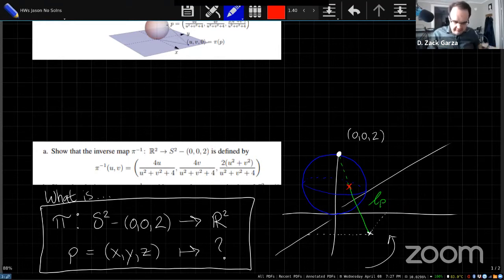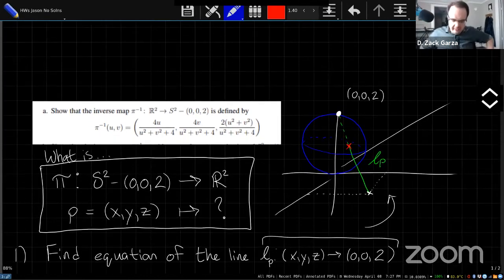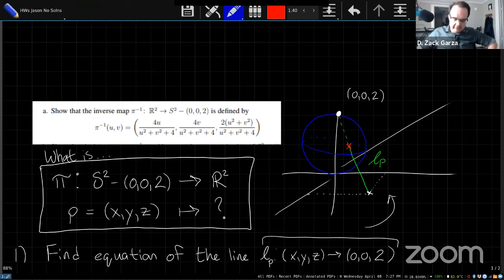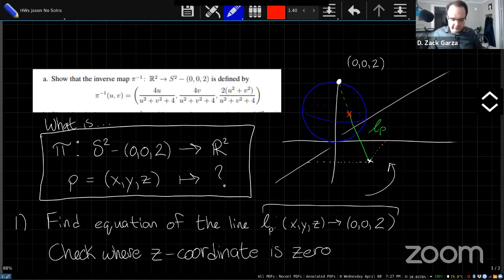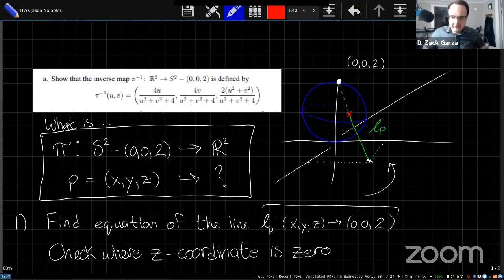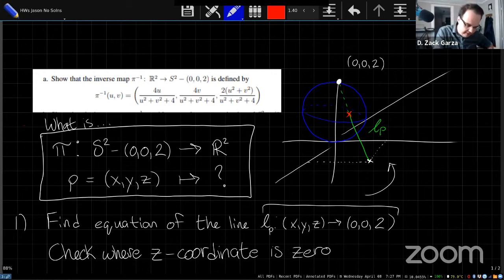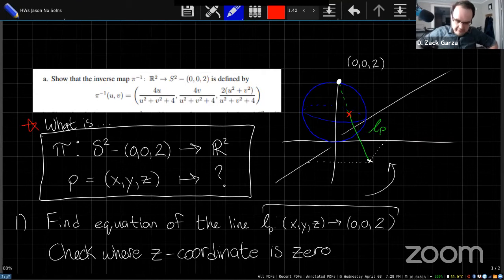And so the first problem gives us this inverse map, pi inverse, which is taking something in the uv plane, projecting it up into s² as a subset of R³. And so the way I would approach this problem is first, it's asking us to show that this map is indeed the inverse of pi, but we don't actually know pi offhand. So I think probably the first thing is what is the actual map pi in coordinates? This should be something that takes s² minus this one point, and gives you a two component vector out of it.